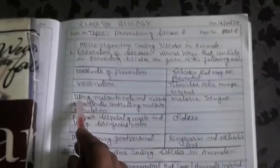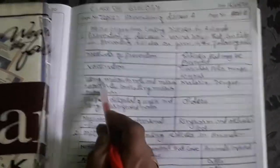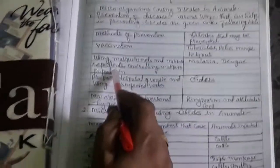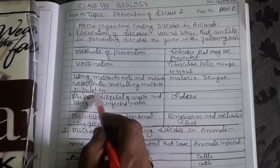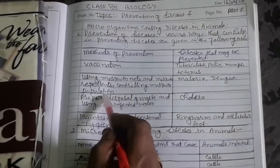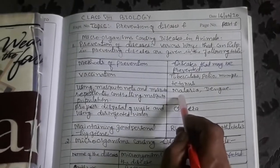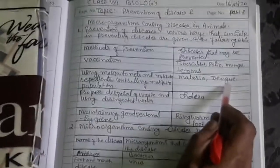The second method of prevention is using mosquito nets and mosquito repellents, and controlling the mosquito population. The diseases that may be prevented by this method are malaria and dengue.